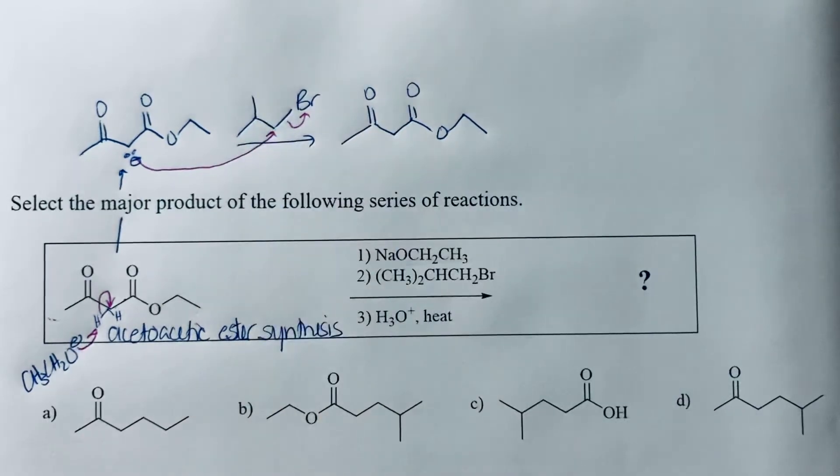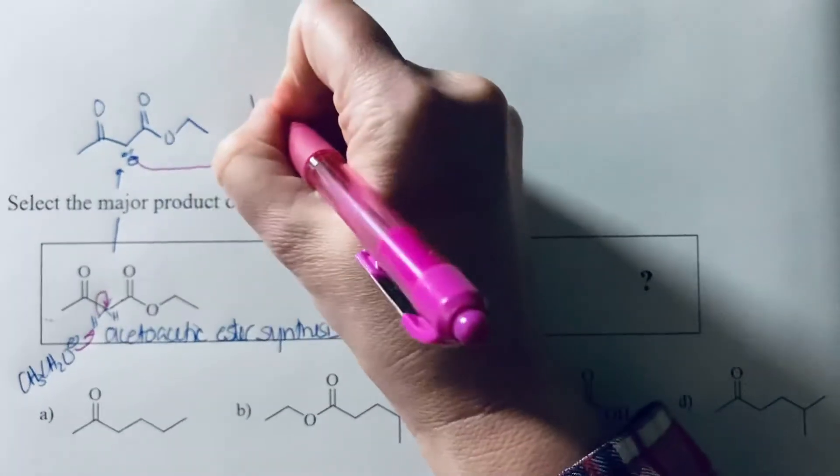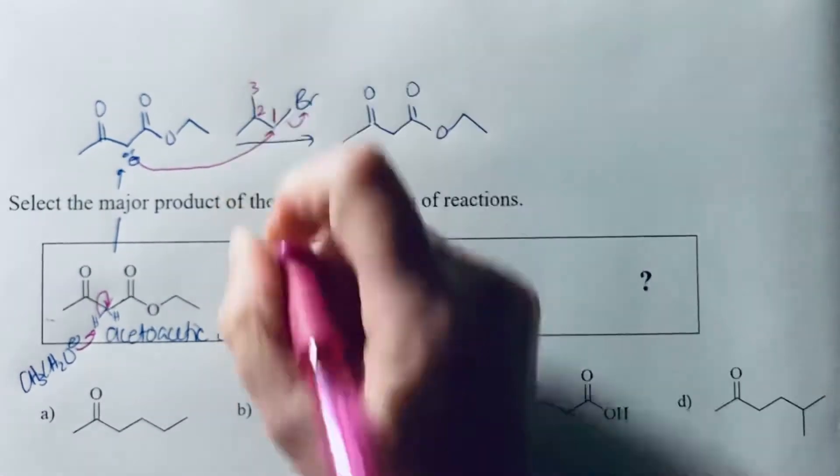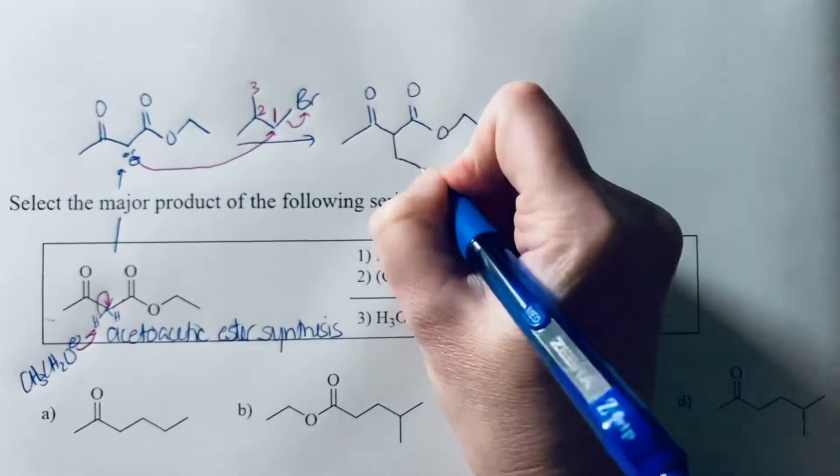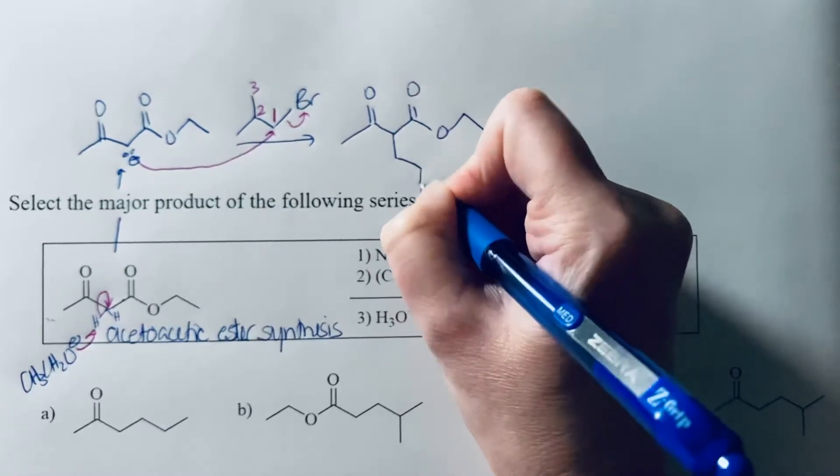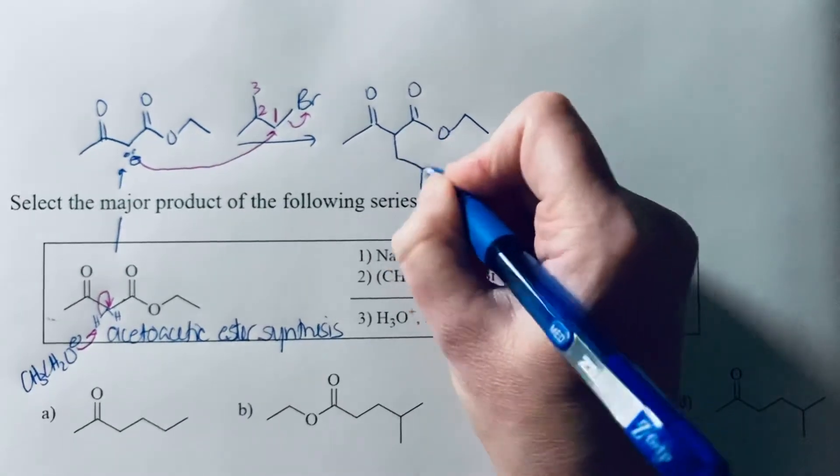And I'm just going to number this main chain so we can keep track of these. So I'm going to say 1, 2, 3, and recognize we've got a methyl group off of that carbon 2. So we have 1, 2, 3, and a methyl group off of that carbon 2.